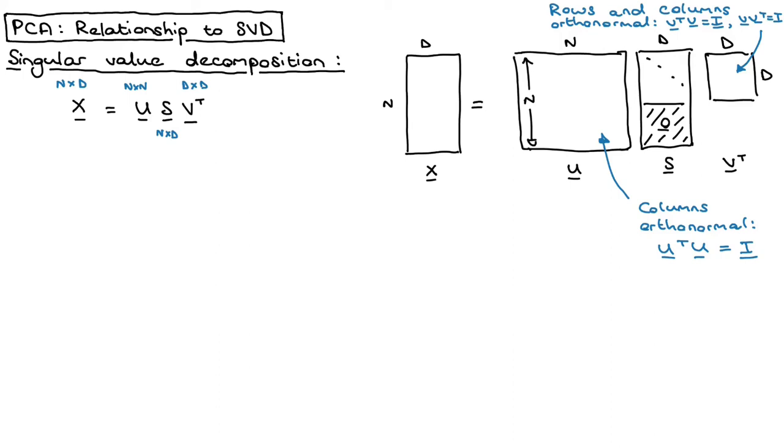What singular value decomposition kicks out is this U will be a matrix with orthonormal columns. That means that if I take the transpose of U and multiply it with itself, then I get the identity matrix. V is a matrix where both the rows and the columns are orthonormal. That means that if I take V transpose and multiply that with V, I get the identity matrix, or if I take V and multiply it with V transpose, then I again get the identity matrix.